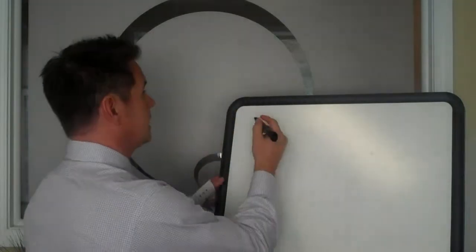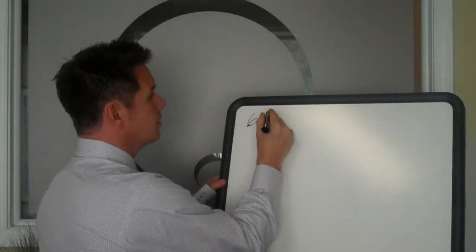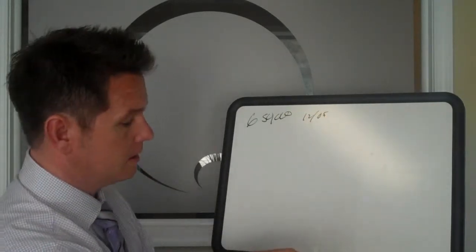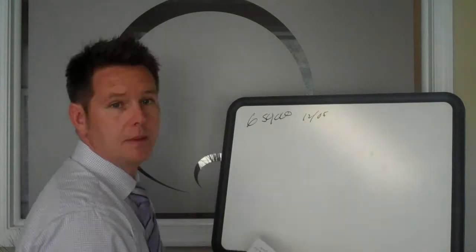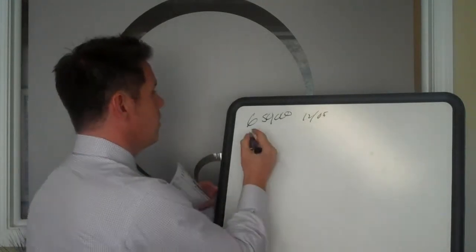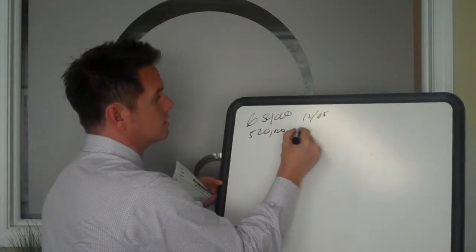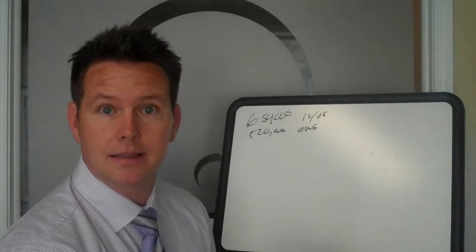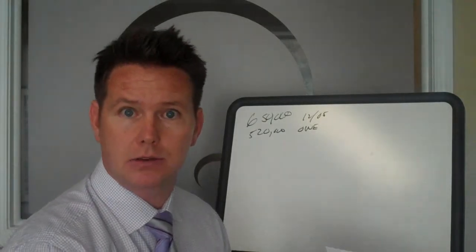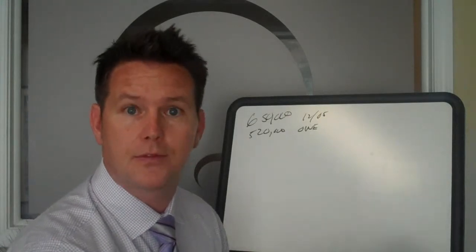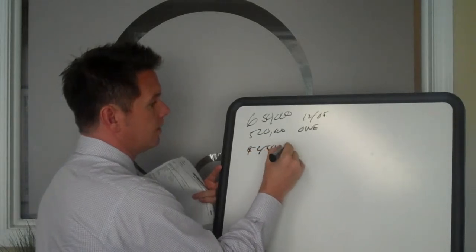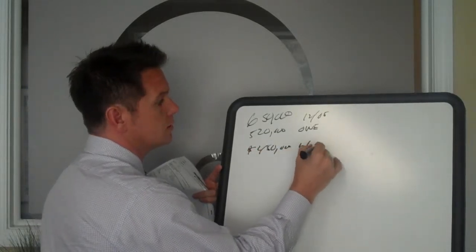This seller paid $650,000 in December of 2005. They put like 20% down back then for round numbers they owe $520,000. Currently today, the property realistically to sell it in the next 30 to 60 days is worth about $450,000 in June of 2012.